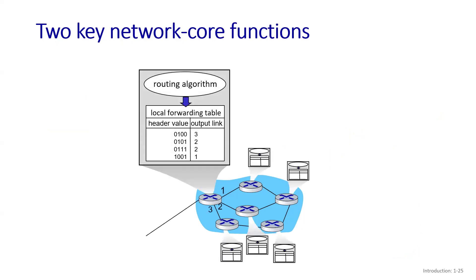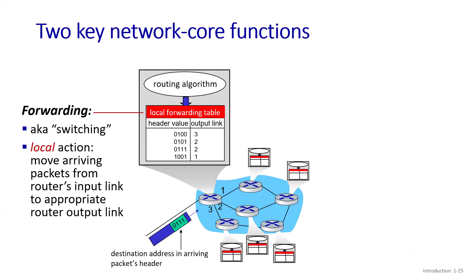There are two important key functions in the network core. The first is called forwarding — we also call it local forwarding, or switching. In local forwarding or switching, when a router receives a packet on its input link or input port, the router reads the header of this packet, looks at the destination address, and then decides to which output link it needs to forward this packet.